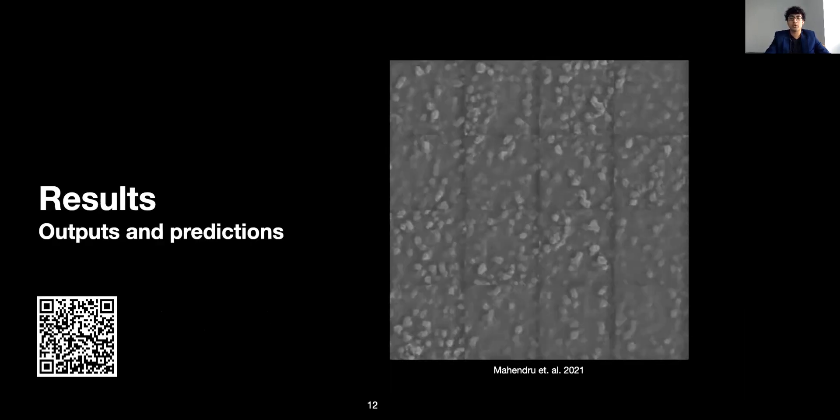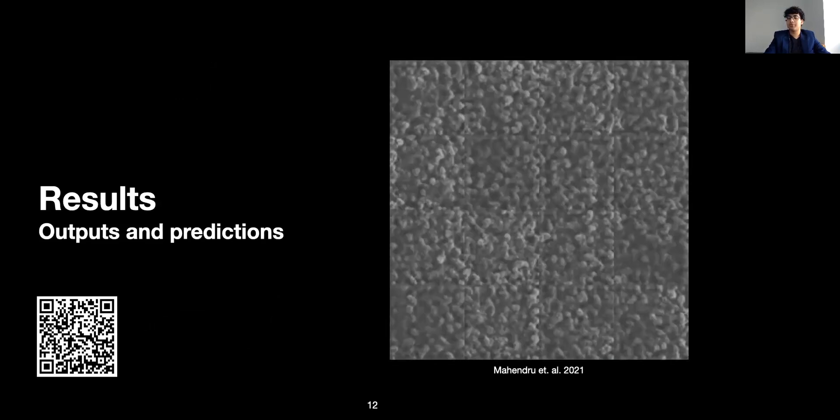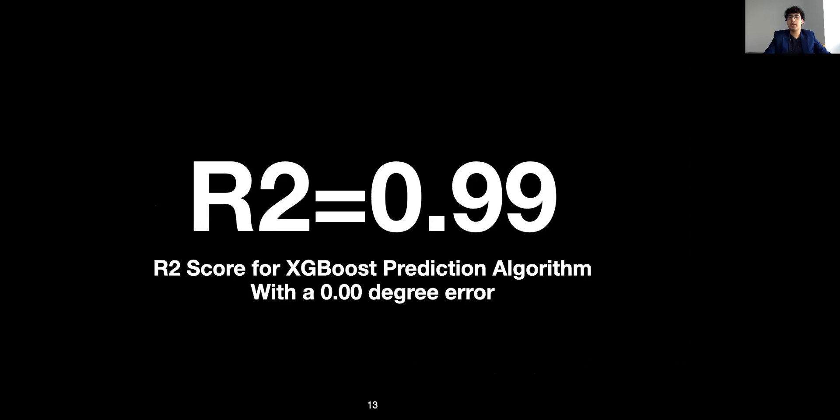Our results are as follows. On the right is a GIF of all the images that we have produced. The R2 score of our predicting algorithms, namely XGBoost, is 0.99 with a zero degree error.